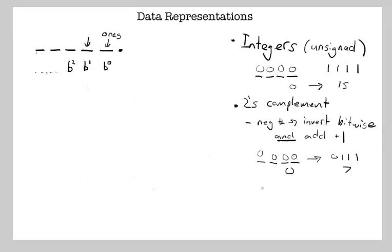and then you can go from 1, 0, 0, 0 on up to 1, 1, 1, 1, which is negative 8 up to negative 1.